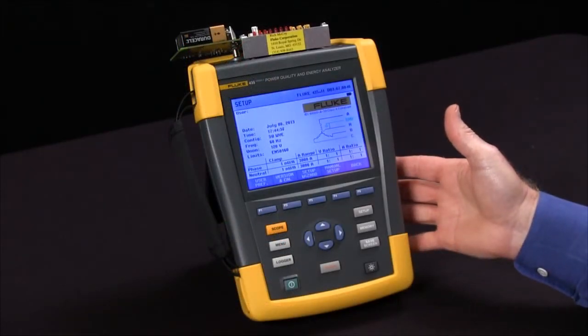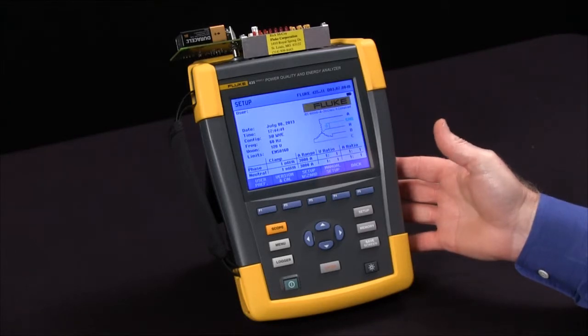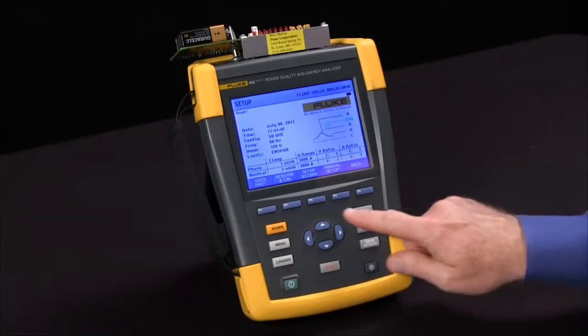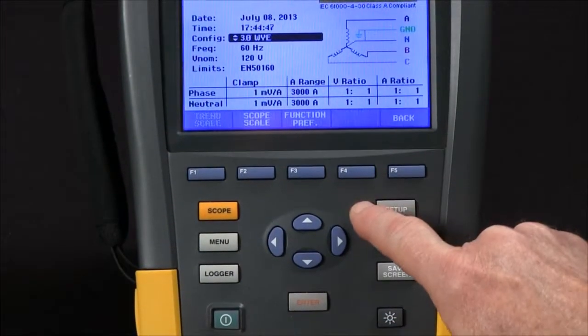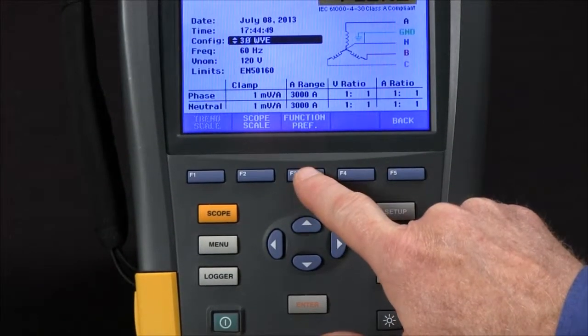In this video we're going to talk about how to set up the 435 to measure dips and swells. From our setup screen we're going to start off by going to manual setup with F4 and then F3 for function preference.